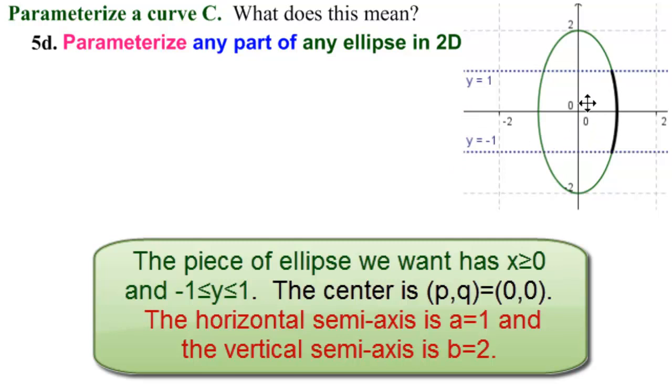We can see that the center is at 0,0, and that the semi-horizontal axis is of length 1, so a equals 1. The semi-vertical axis is 2, so b equals 2.